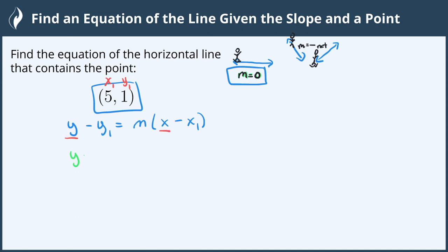So we have y minus y sub 1 is 1. Our slope is zero, so we'll put zero in for m. x minus x sub 1 is 5, and then we solve.